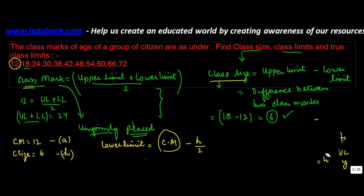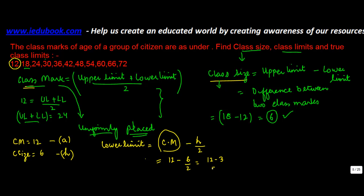Considering this analogy, lower limit will be equal to 12 minus 6 divided by 2, or 12 minus 3, which is equal to 9. Upper limit is equal to class mark plus H divided by 2, or 12 plus 6 divided by 2, 12 plus 3, 15.